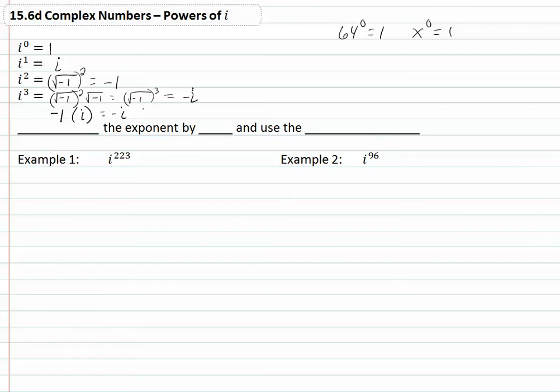Whenever we want to use higher powers, or when we run into higher powers of i, there's a really simple method to simplify that. We take and divide the exponent by four, notice over here that we have four different i's, and then we use the remainder to determine what it equals.